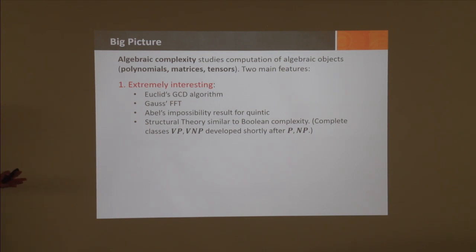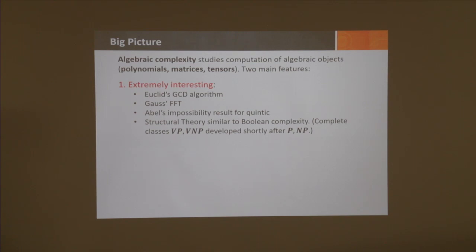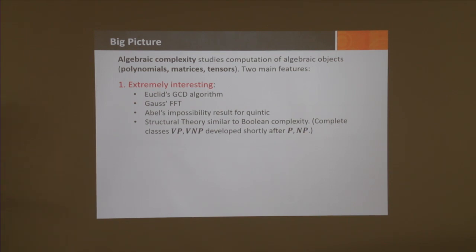Then Gauss came with the fast Fourier transform. Bell proved the first impossibility results—already an unconditional lower bound. And the structure theory of algebraic complexity is very similar to Boolean complexity. For example, the complete classes VP and VNP were developed by Valiant shortly after the development of P and NP.